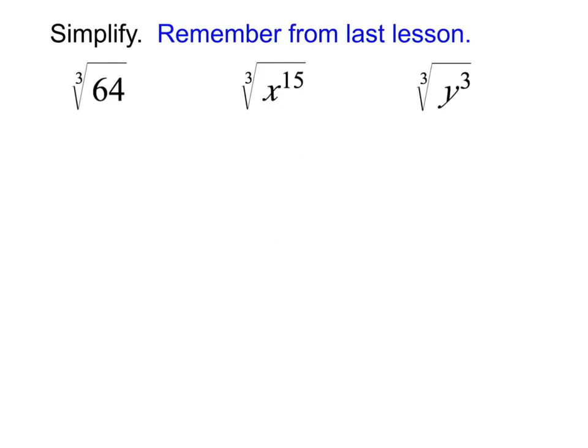Yesterday, we already did these three problems, but I want to bring them back to mind because they're about to become very relevant for what we're doing today. So we saw yesterday that I could simplify the cube root of 64 by either making like a factor tree and counting up the twos, or even just recognizing, hey, this is one I should know. 4 cubed equals 64.